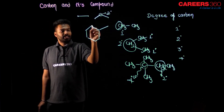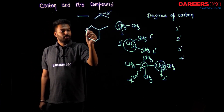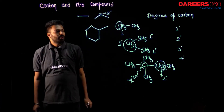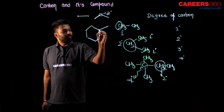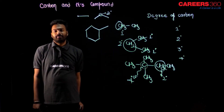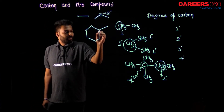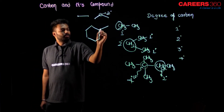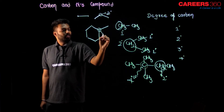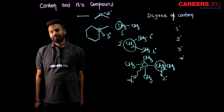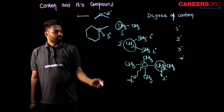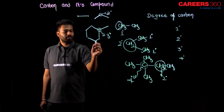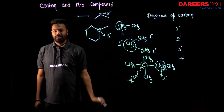Now tell me — here is carbon, carbon, carbon, carbon, carbon, carbon. What about the degree of this particular carbon? From it, one carbon connects here, two carbon here, and three carbon here. So this carbon is three degree carbon. What about the next carbon? Two degree, because it is connected to one carbon here and one carbon here.